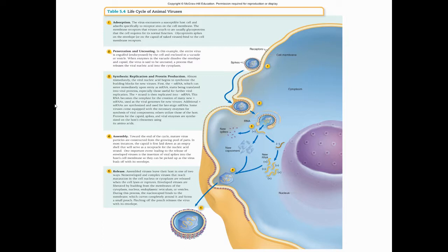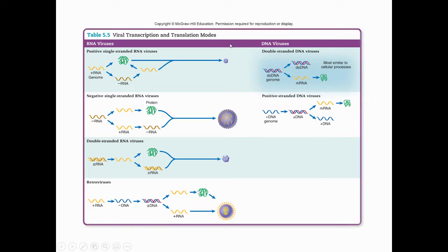Table 5.5, which is posted in D2L since it's not in this version of the text, has a summary of viral transcription and translation. We will always have to transcribe into RNA and then translate into protein, because we need proteins for the protein coat. If we come in with DNA, we may also need to do DNA replication to build more DNA for the new virions. If we come in with RNA, we use that RNA to build proteins or to build the complementary strand, and we also make the complementary strand to use as a template to build more of the original RNA type.